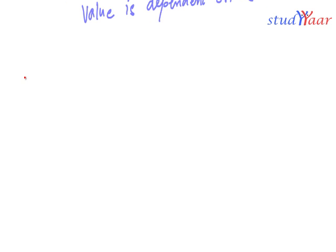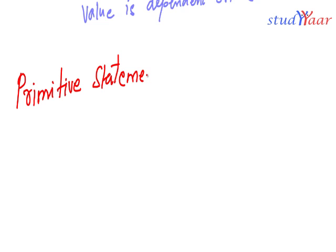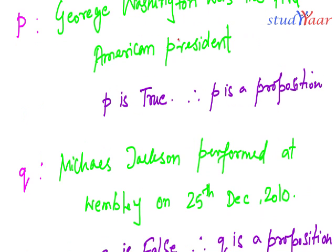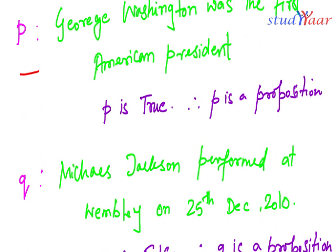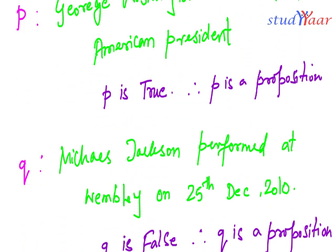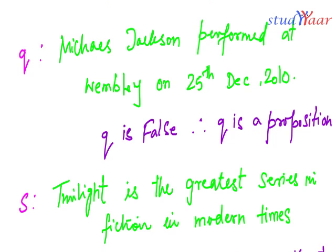Now we are going to understand another terminology: a primitive statement. A primitive statement is a proposition that cannot be broken down into a simpler statement. For example, P which says 'George Washington was the first American president' is a primitive statement because I cannot make it any simpler. The same is the case with Q and S.